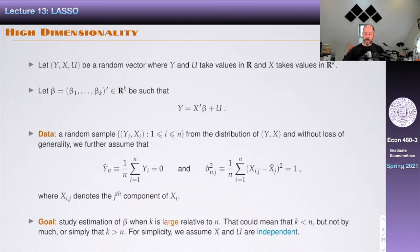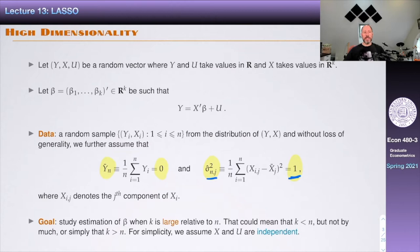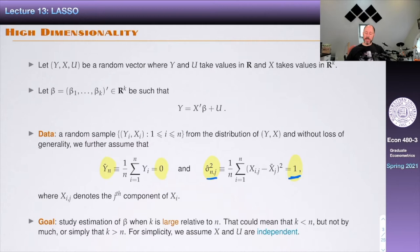The goal is to estimate beta. We're not going to talk about inference in the form of hypothesis testing or confidence intervals today — just estimation. The complication is that we want to consider the case of high dimensionality, which could mean you have fewer regressors than sample size but not by much, or it could mean you have more regressors than sample size. For simplicity, we assume today that X and U are independent.